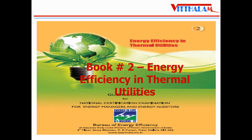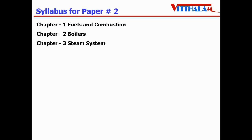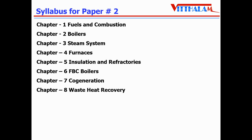Paper number 2, book number 2, is Energy Efficiency in Thermal Utilities. The syllabus covers: fuel and combustion, boilers, steam system, furnace, insulation and refractories, FBC boilers, co-generation, waste heat recovery, and heat exchangers.